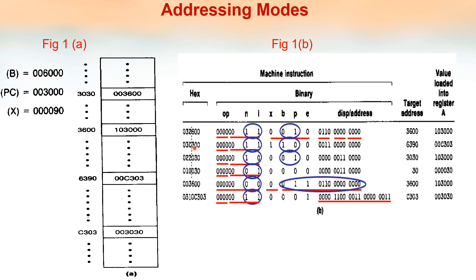In a similar way, you can calculate all the instructions: first convert to binary, then find out which addressing mode is being used, and according to that, calculate the target address.